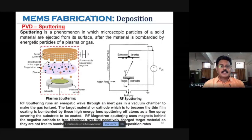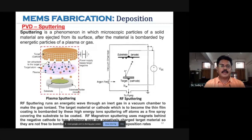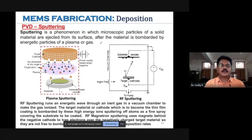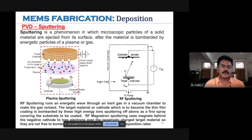Sputtering is a phenomenon in which microscopic particles of a solid material are ejected from the surface after the material is bombarded by energetic particles of plasma or gas. In the PVD sputtering setup, a chamber — shown by a red dotted boundary — serves as the reactor where the process happens.